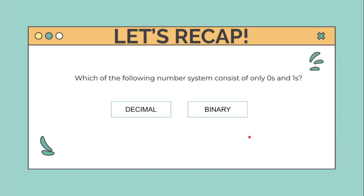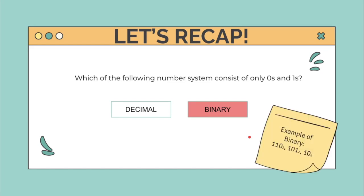Which of the following number systems consists of only zeros and ones? Is it decimal or binary? Only zeros and ones — that would be binary. These are examples of binary: 110 base 2, 101 base 2, 10 base 2.